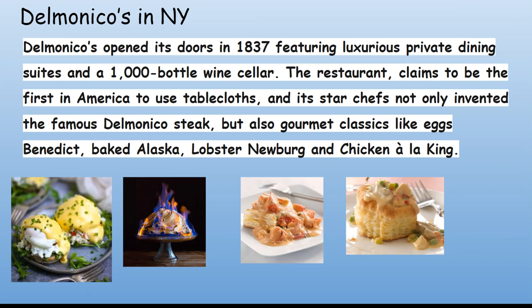Delmonico's is a famous restaurant in New York City that opened in 1837. It featured luxurious private dining and a wine cellar with a thousand different kinds of wine. It was claimed to be the first restaurant in America to use tablecloths. Its star chefs invented the famous Delmonico steak as well as gourmet classics like Eggs Benedict, Baked Alaska, Lobster Newberg, and Chicken à la King.